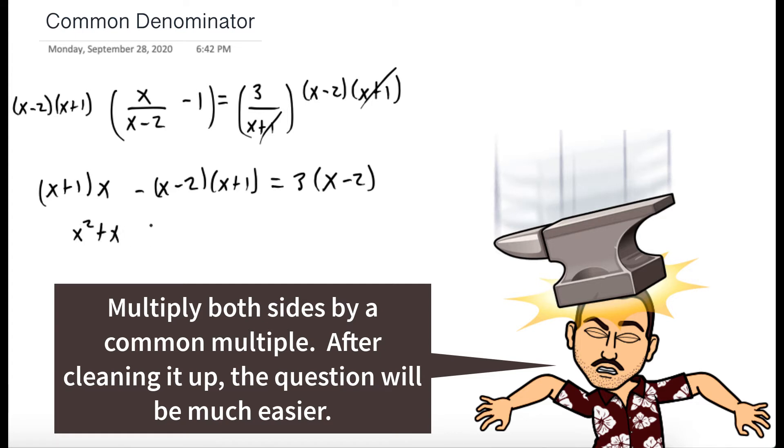Let's distribute everything out. So we have x squared plus x minus the quantity x squared minus x minus 2 is equal to 3x minus 6.